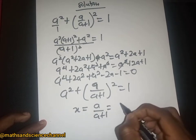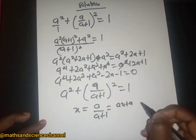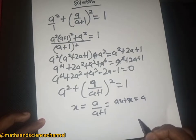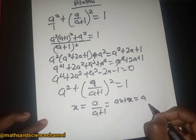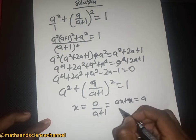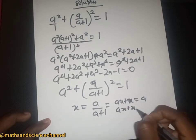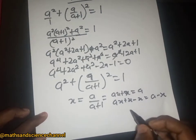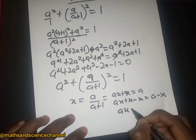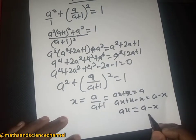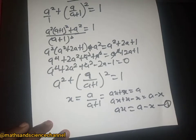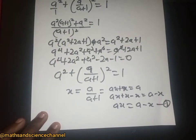If x equals a over (a plus one), when we expand, we get ax plus x equals a. Subtracting x from both sides gives us ax equal to a minus x. Let's call this equation one.